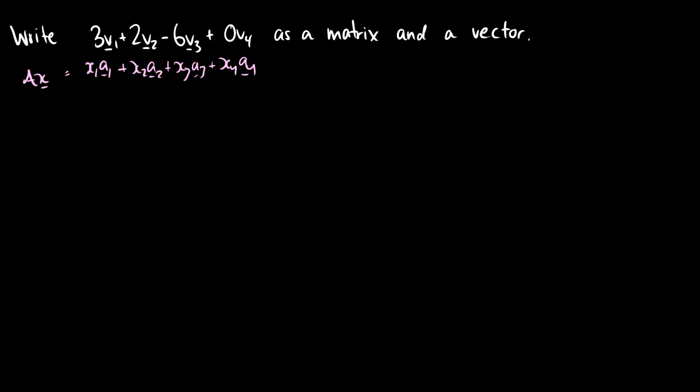So our matrix A, what is that going to look like? Well, that's where we put our a1, a2, a3, and a4, but we weren't given specific vectors. We were just given v1, v2, v3, and v4. So let's put those in here. This is v1, v2, v3, and v4. So that's A.